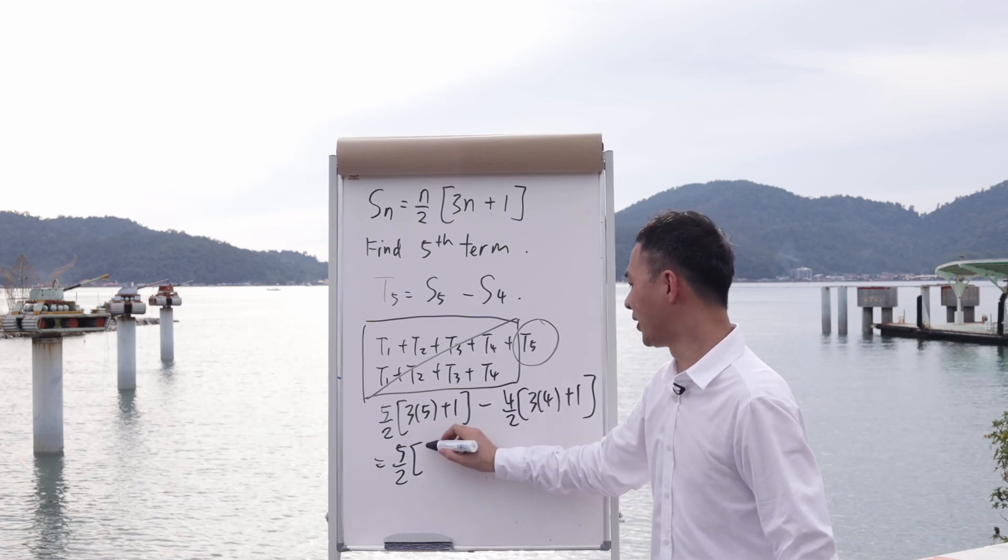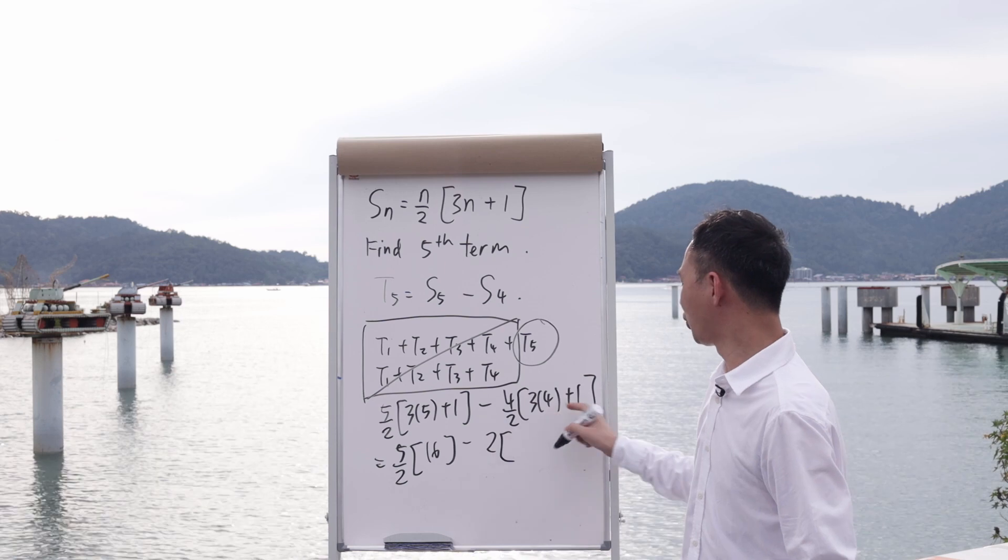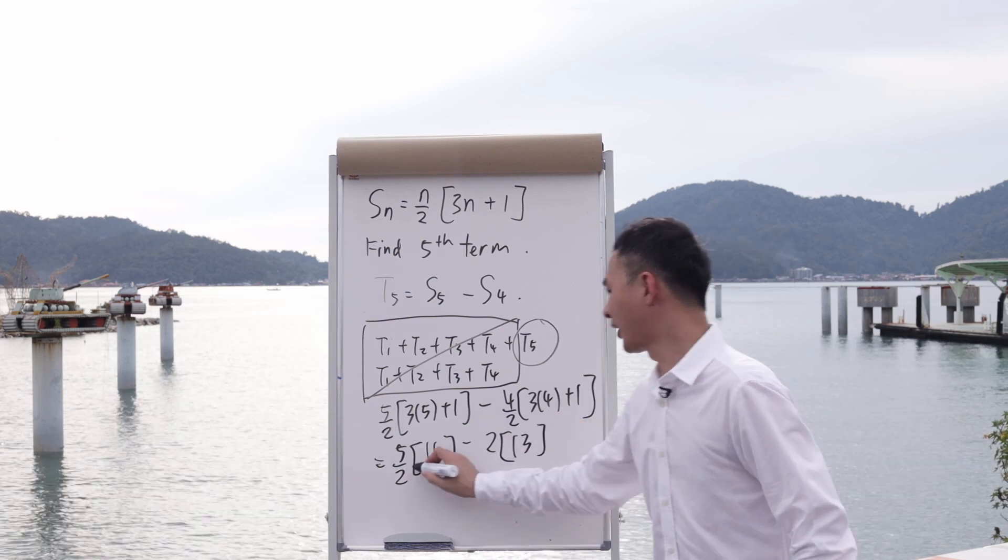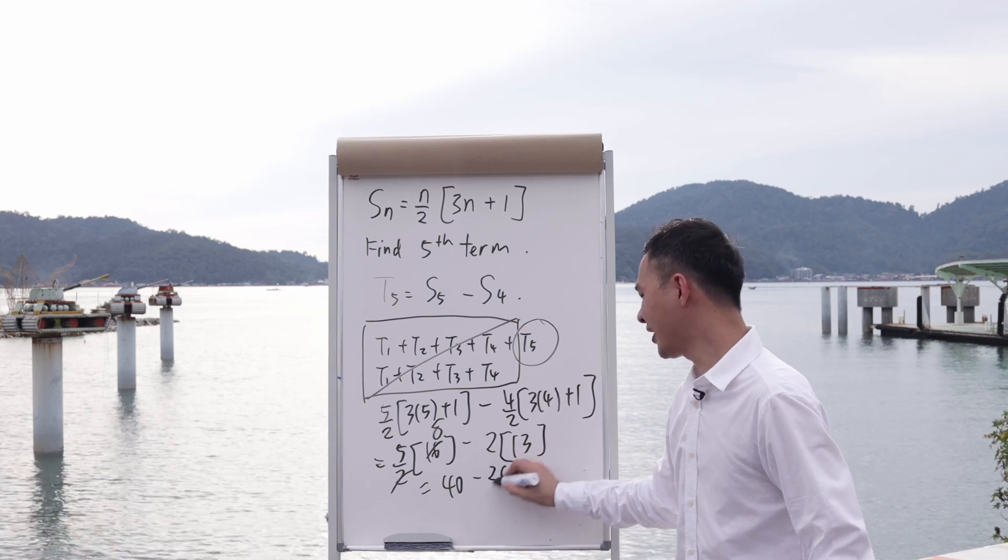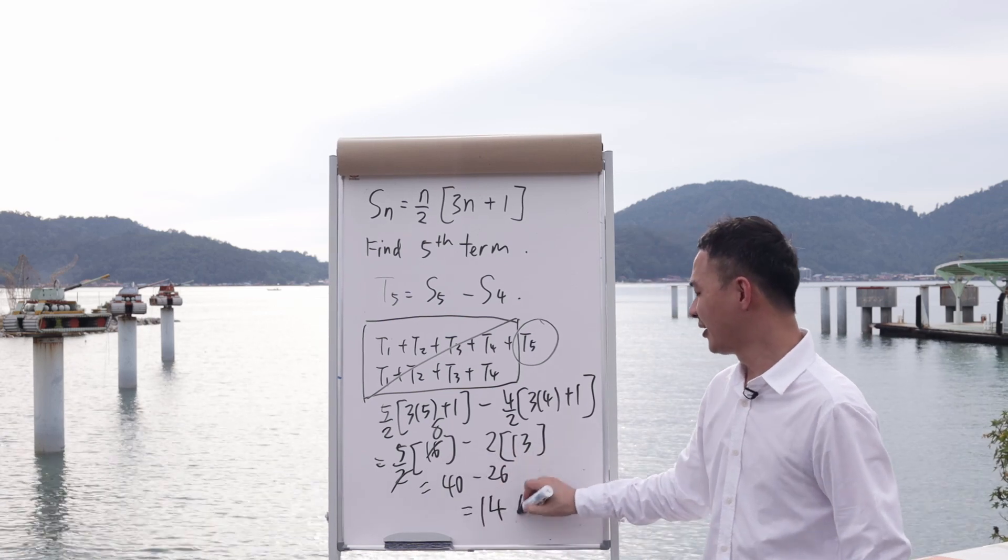Simplifying this: 5 over 2 times 16 is 40, and 2 times 13 is 26. So 40 minus 26 gives you the final answer of 14.